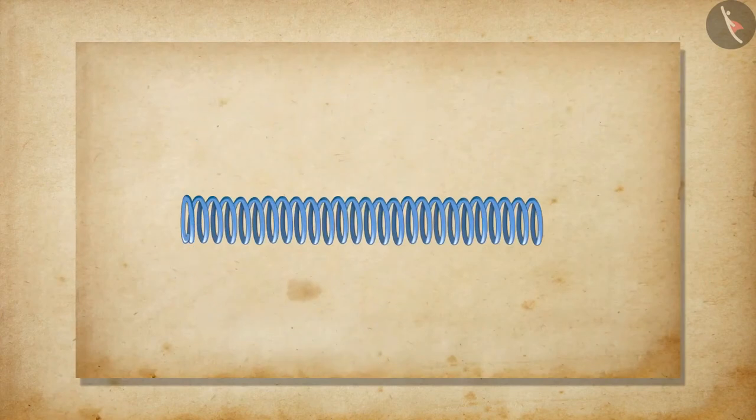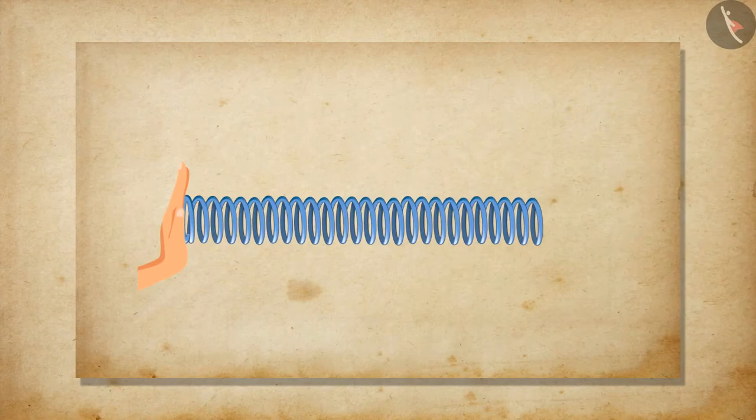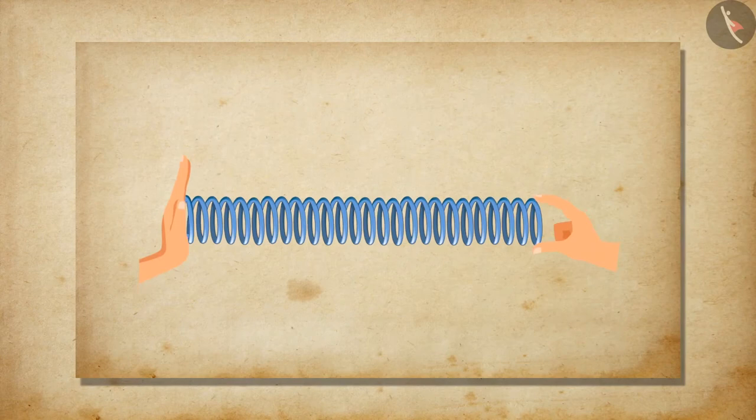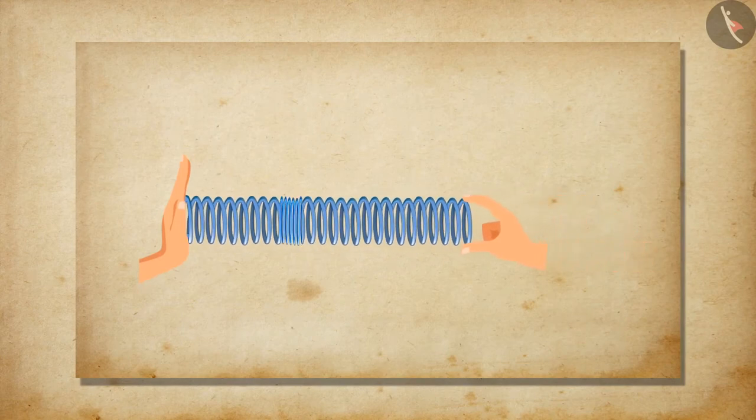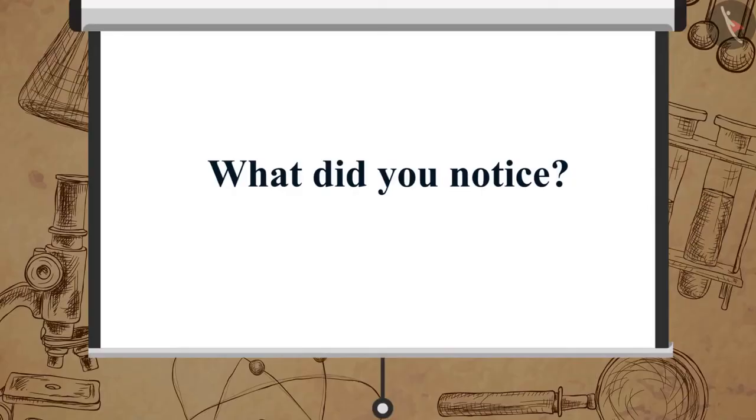Take a slinky and ask your friend to hold one of its ends. You hold the other end of the slinky. Stretch the slinky and then give a sharp push towards your friend. What did you notice?